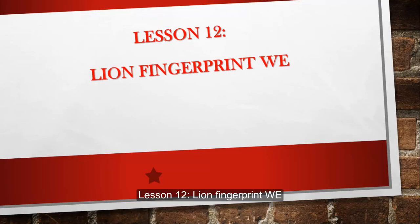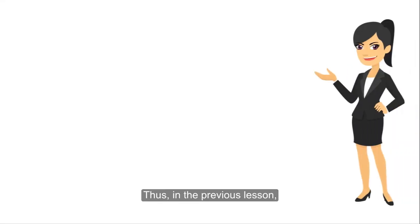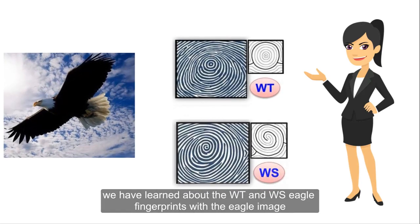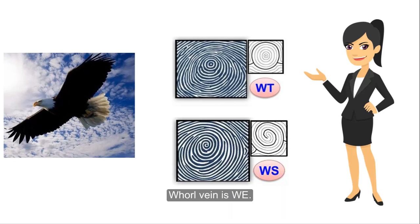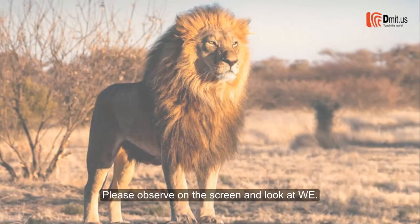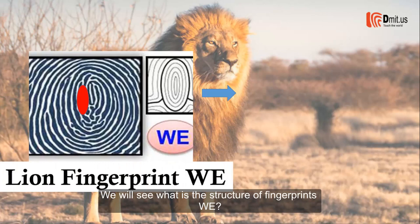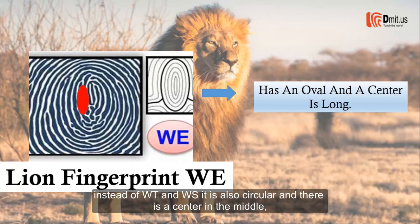Lesson 12: the WE fingerprint. In the previous lesson we learned about the WT and WS eagle fingerprints. In this lesson we will learn one more fingerprint that is also in the group. Please observe on the screen — we will see the structure of the WE fingerprint. Like WT and WS, it is also circular, and there is a center in the middle.